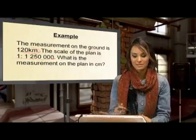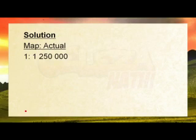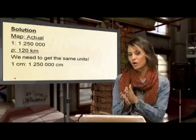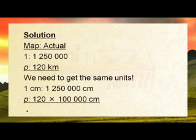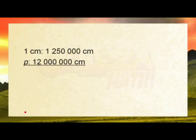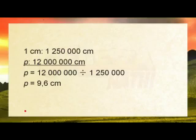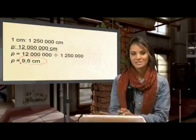So they're asking us what the measurement on the map is. We're given the measurement on the ground and we have the scale. We know the scale is 1 to 1,250,000 and our ground measures 120 kilometers. We need to get the same units — we have centimeters and kilometers. One centimeter goes to 1,250,000 centimeters. To get from kilometers to centimeters, we multiply by 100,000, and that gives us 12,000,000 centimeters. Now we divide 12,000,000 by our scale of 1,250,000, and that gives us 9.6 centimeters. So 120 kilometers on the ground equals 9.6 centimeters on the map.